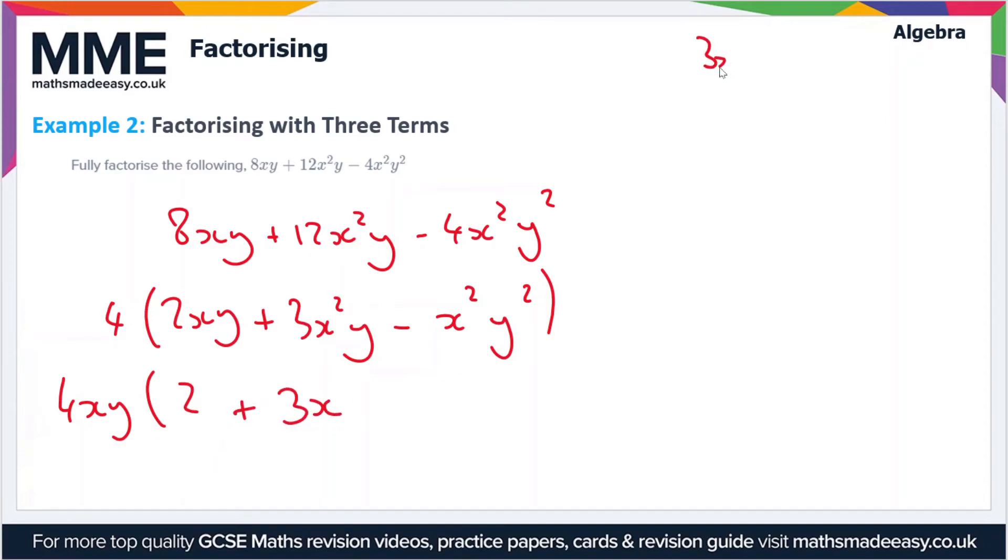Because 3x squared y over xy just cancels to 3x. So the y's cancel. One of the x's cancel and we're left with 3x. And then finally if we divide minus x squared y squared by xy.